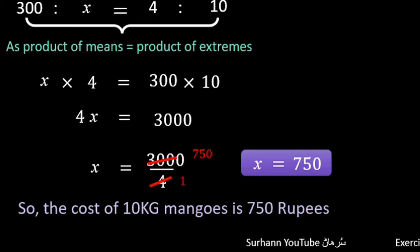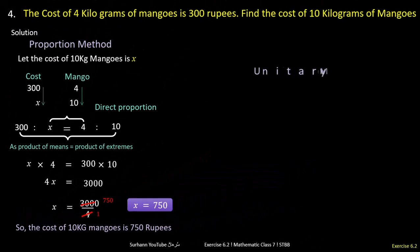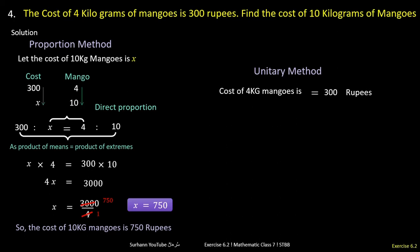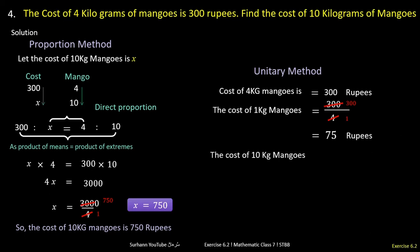Solving gives the cost of 10 kg mangoes as 750 rupees. Now we solve the same problem by the unitary method. Cost of 4 kg mangoes is 300 rupees, so cost of 1 kg = 300 ÷ 4 = 75 rupees. To find the cost of 10 kg mangoes, multiply 75 by 10, giving 750 rupees. So the cost of 10 kg mangoes is 750 rupees.